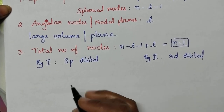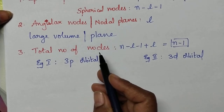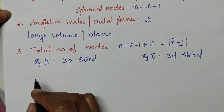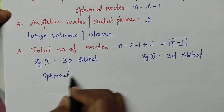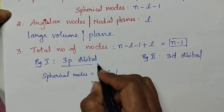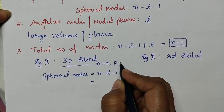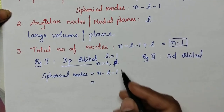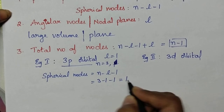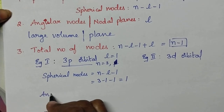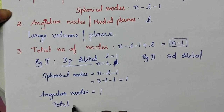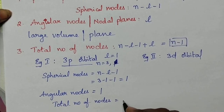Let us see one example: find the number of spherical, angular and total nodes for 3p orbital. For spherical nodes, the formula is n-l-1. For 3p, n=3 and L=1, so spherical nodes = 3-1-1 = 1. Angular nodes = L value = 1. Total nodes = n-1 = 2.